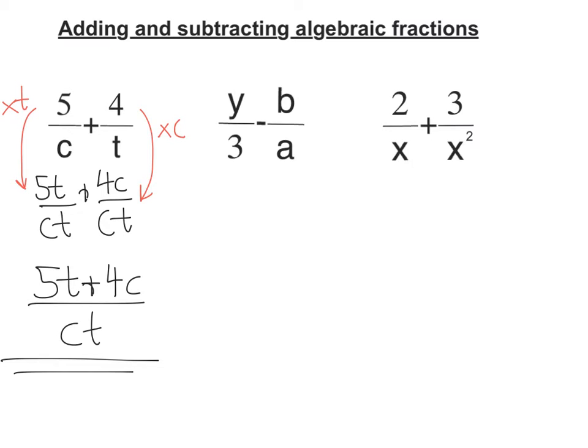Y over 3 minus B over A. So the lowest common denominator of 3 and A is 3A. So I'm going to both put them over 3A. To this fraction here, to get 3A on the bottom, I had to times it by A, top and bottom. And this one, to get 3A on the bottom, I have to times it by 3.